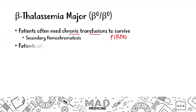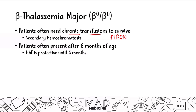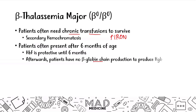These patients are often going to present after six months of age. The reason why is because they have fetal hemoglobin, which is going to protect them up until six months. Afterwards, the patient is not going to be able to produce any beta globin chains, and that's going to reduce the production of functioning hemoglobin. It will lead to an increase in hemoglobin F and hemoglobin A2 — recall, hemoglobin A2 consists of two alpha chains and two delta chains. However, it is not going to be enough to sustain them for life.